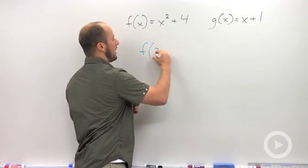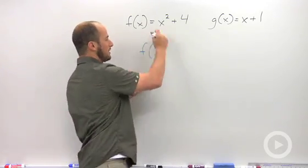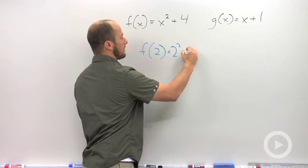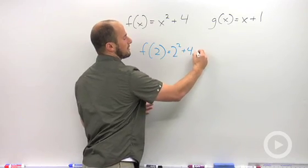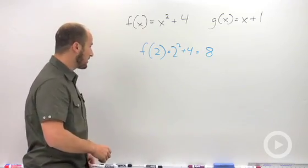Just a brief reminder: if I asked you to find f of 2, you just plug in 2 for x and solve it out. So this becomes 2 squared plus 4. 2 squared is 4, so this is just 8.